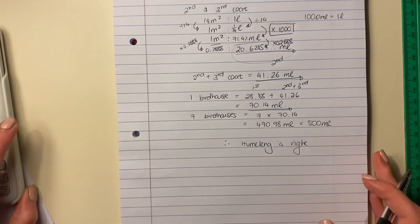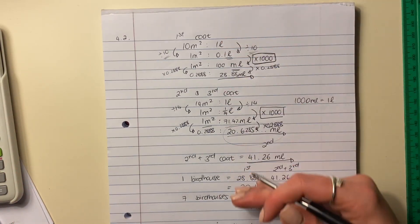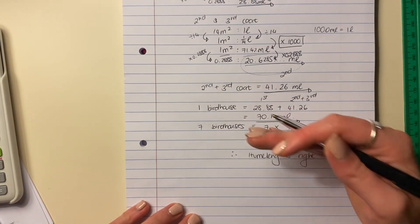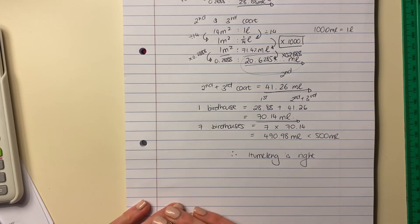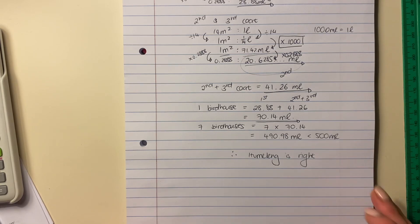So there's lots of ways you could do this, but to me, this is the most logical way. You go through first coat, second and third coat. What would one birdhouse be? What would seven birdhouses be? And then verify it against his statement. Quite a tricky question that, also eight marks. So work carefully. Let's move on to the next question.